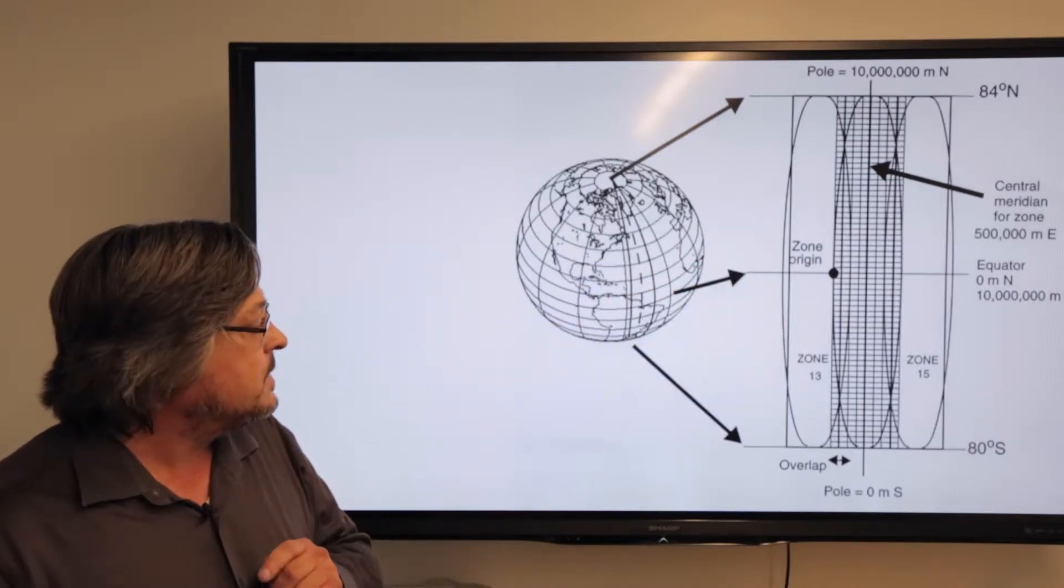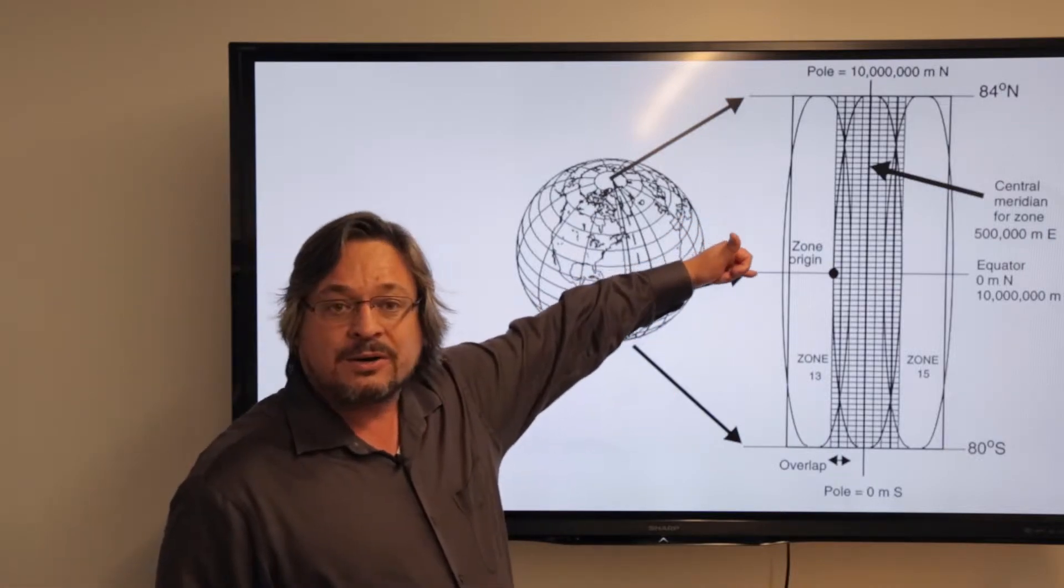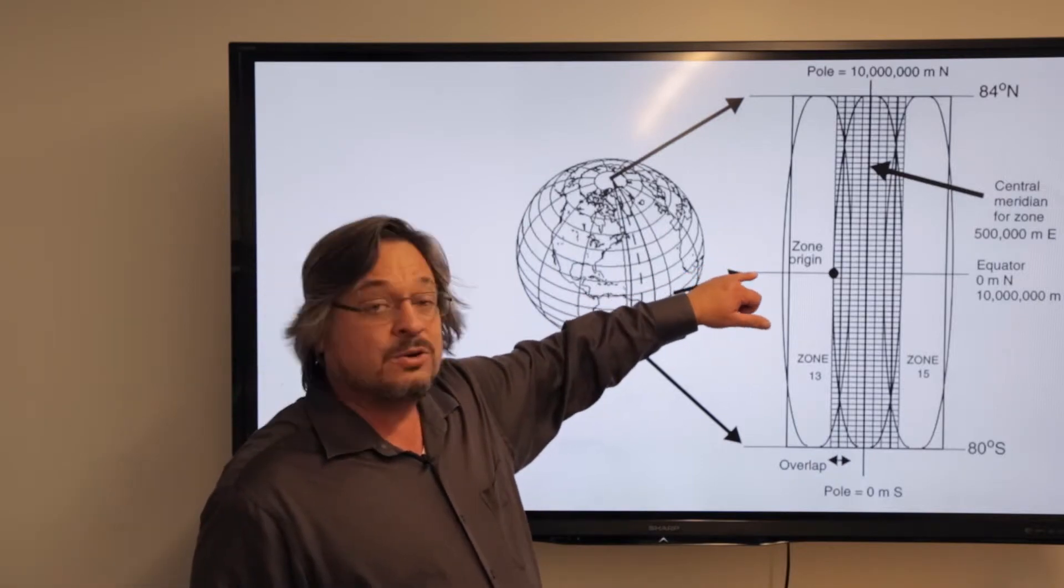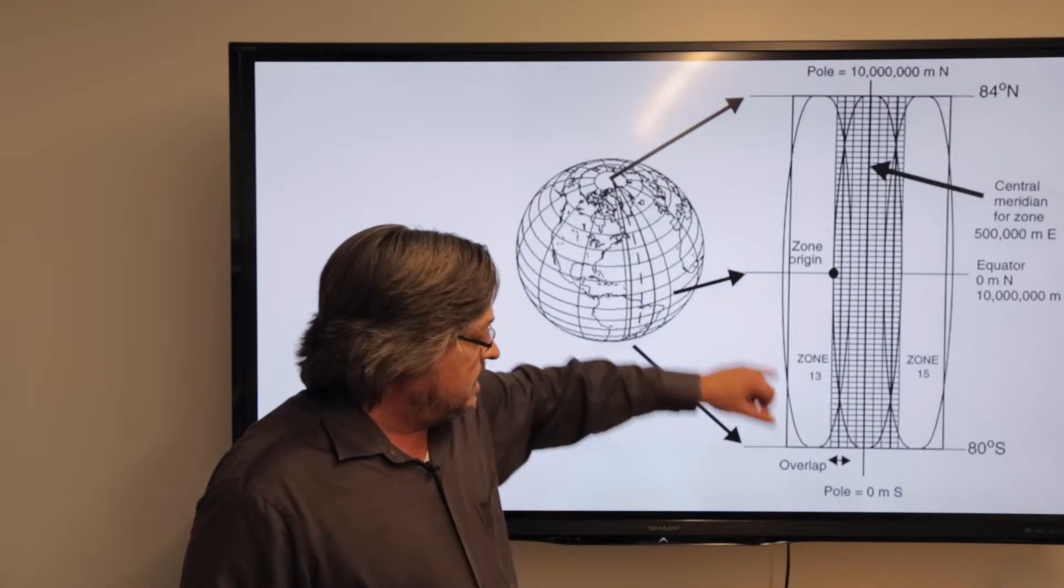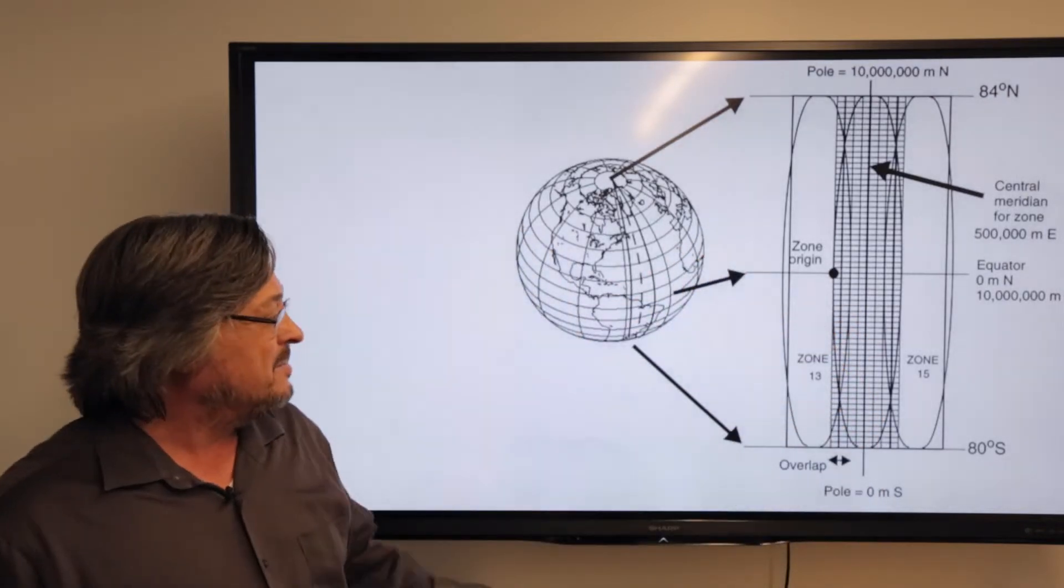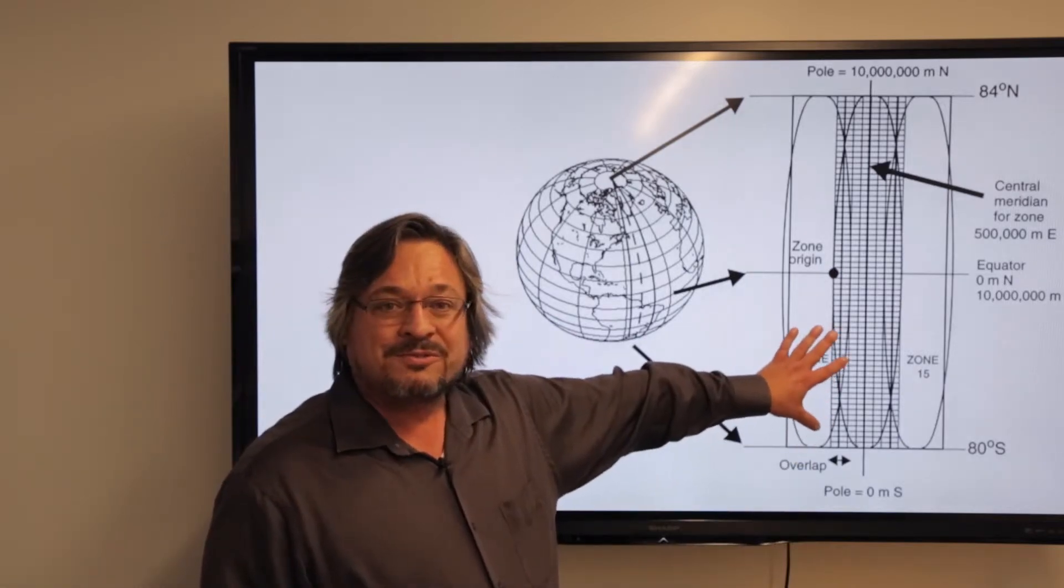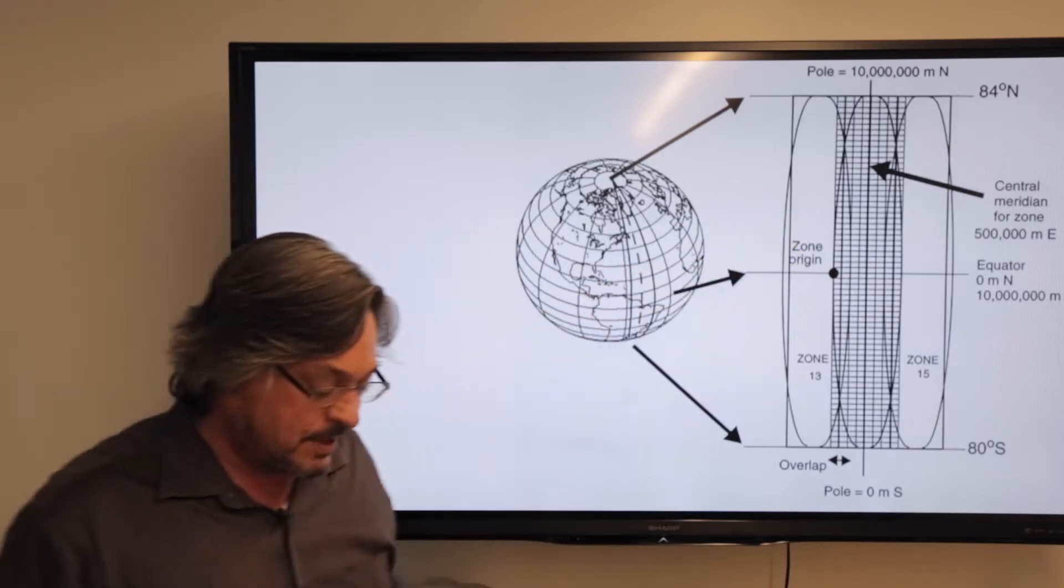The defining lines for the UTM becomes the equator, which is the zero point from which we measure our northings off of in the northern hemisphere. In the southern hemisphere, you go off the south pole, but the southern hemisphere is a little more interesting to work with. Let's just focus up here for right now.